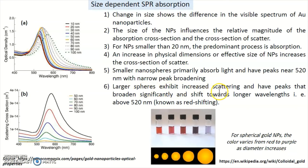Larger spheres exhibit increased scattering and have peaks that broaden significantly and shift toward longer wavelength — above 540 nanometers. This is known as red shifting. So if nanoparticles are very small, their absorption is higher and scattering is lower. If the nanoparticles are very big, absorption is lower and scattering is higher. Because of this change in extinction coefficient, you realize different types of color.